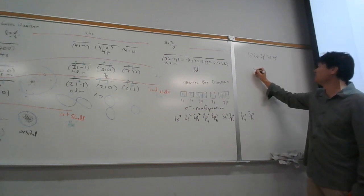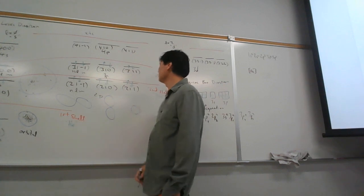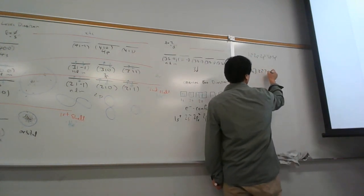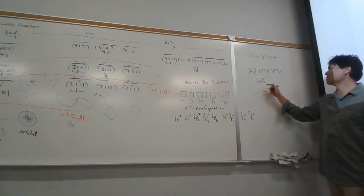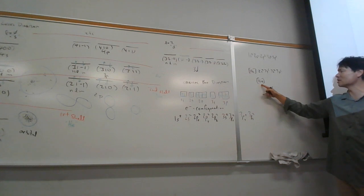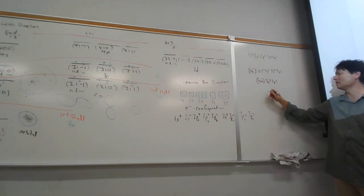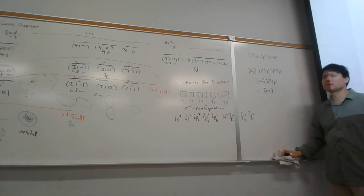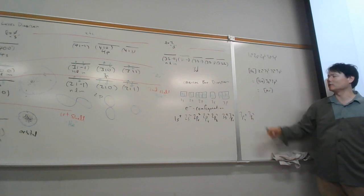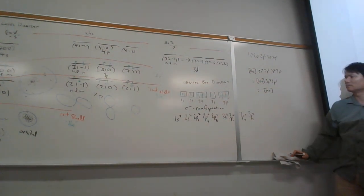We can also use noble gas abbreviations. Instead of writing 1s2 we call it helium, giving helium, 2s2, 2p6, 3s2, 3p6. We can abbreviate further: filling the first and second shells is called neon, so neon, 3s2, 3p6. And since 3s2, 3p6 fills the third shell, that equals argon. So these noble gas abbreviations are all examples of electron configurations.